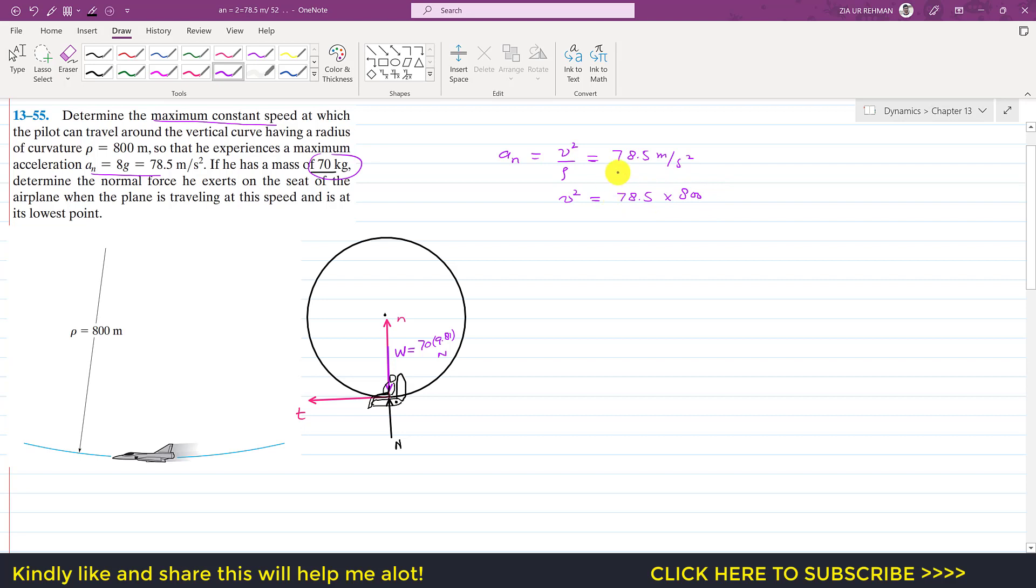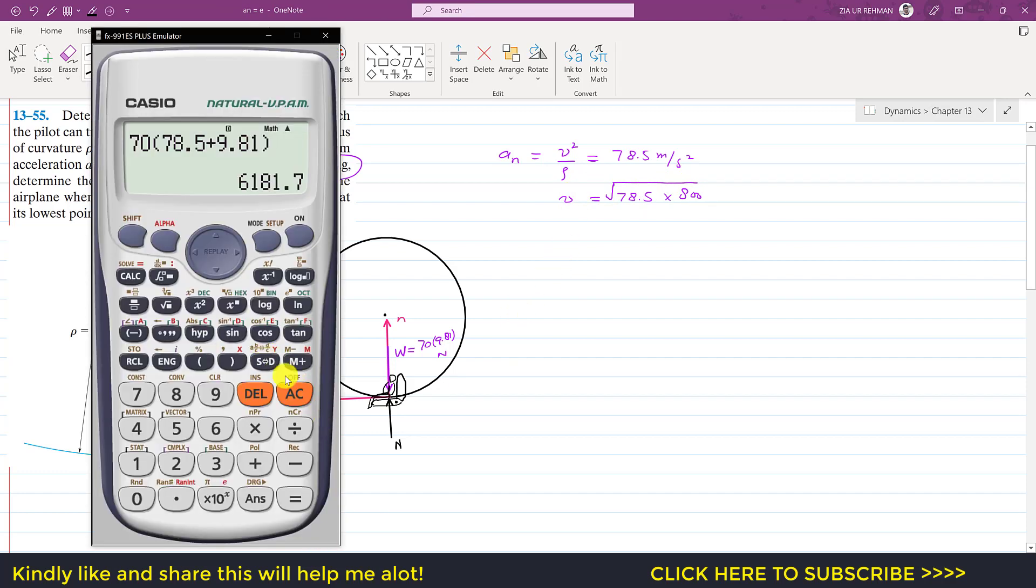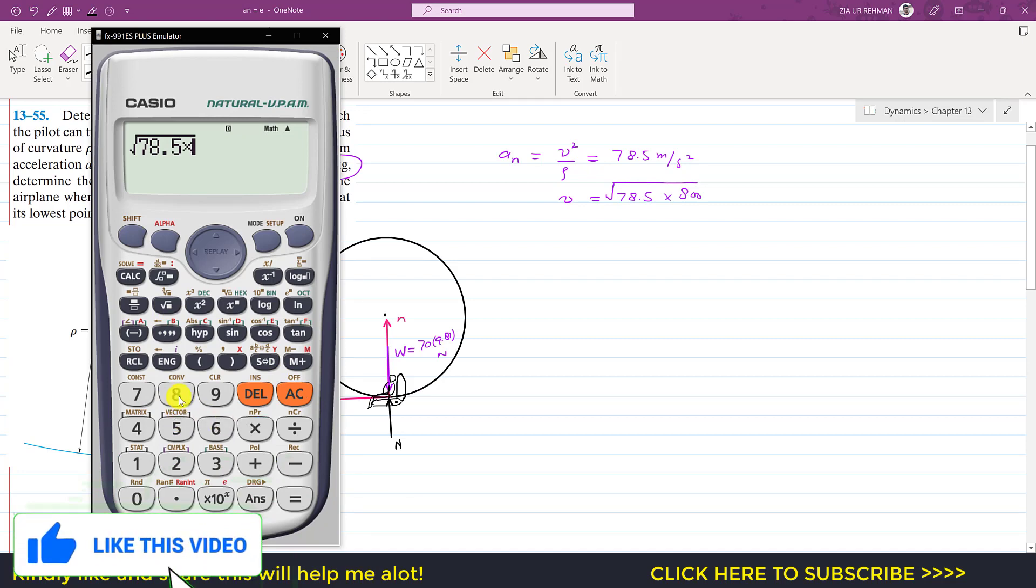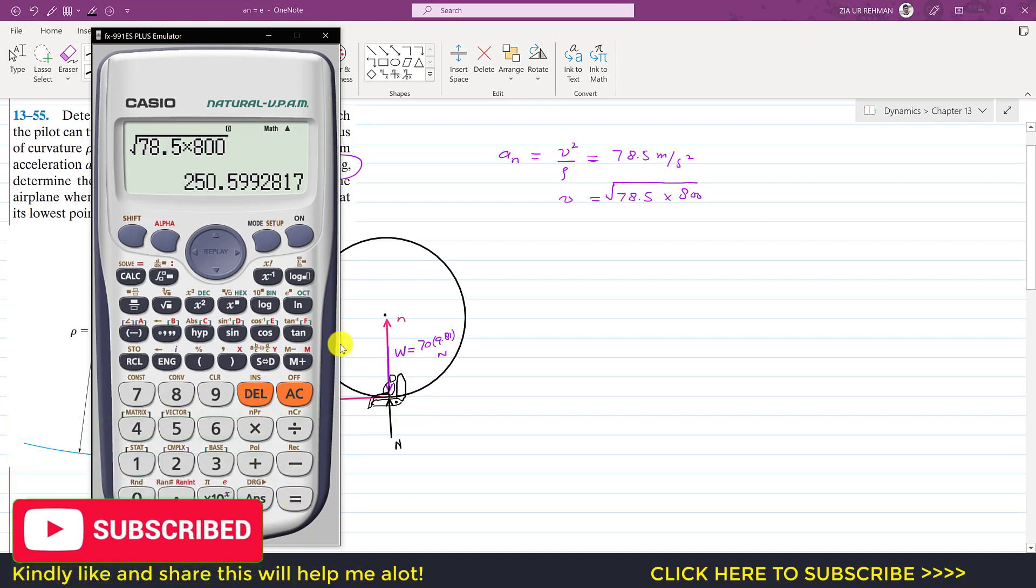So we need to take the square root. So if I take the square root we will get that maximum velocity, constant velocity with which it is moving. So this is 78.5 into 800, so this is 250